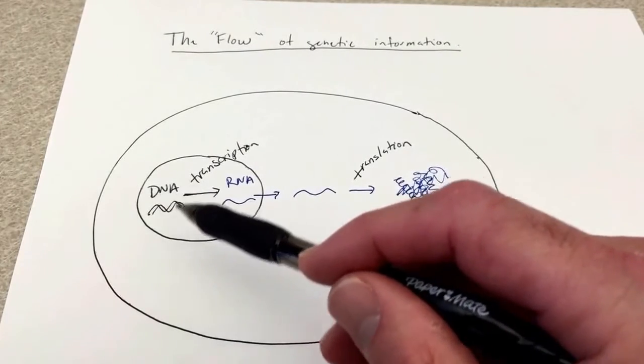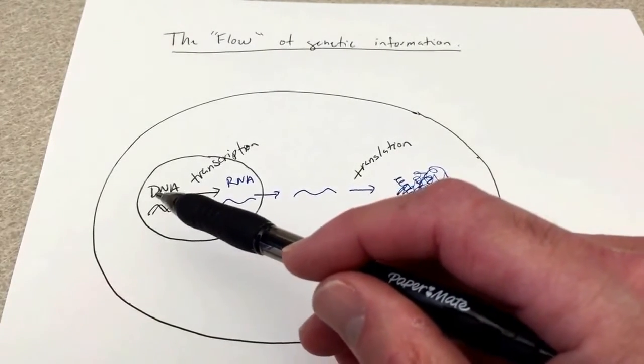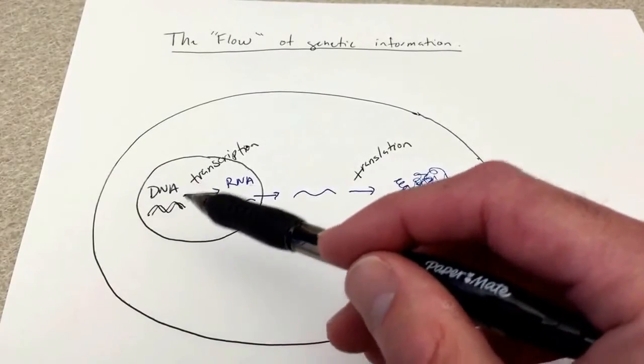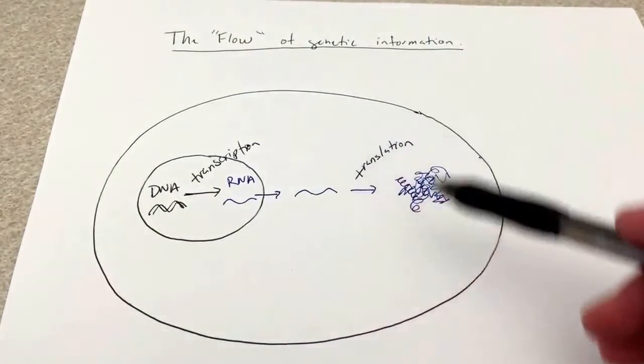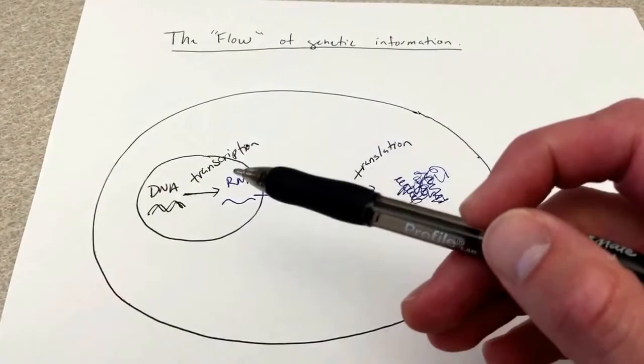Alright, so our genomes, which we can think of like the cookbook, contain all the instructions, all of the recipes for all the stuff that makes up the cell. But if I want to make something at my own home, I can't take my mother's cookbook out of her kitchen.